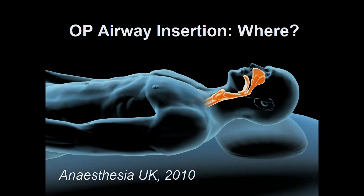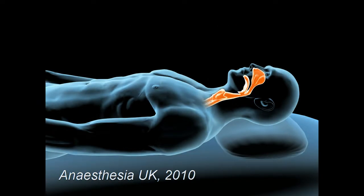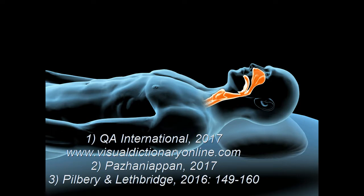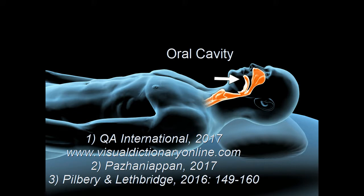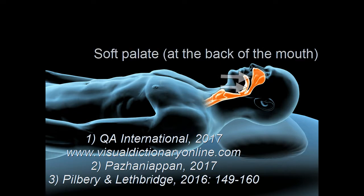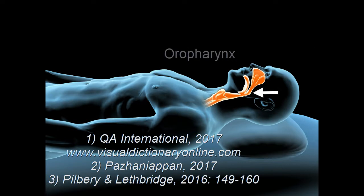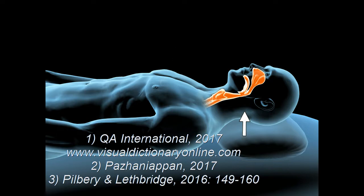Airway adjuncts prevent the tongue from partially or completely obstructing the airway. The key parts of the upper airway for this video concern the nasal cavity, the oral cavity, the hard palate, the soft palate, the oropharynx and the pharynx, which is a muscular membranous channel that begins at the base of the skull and connects the nasal cavity to the larynx and the esophagus.